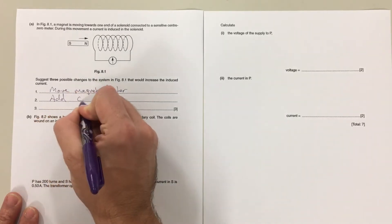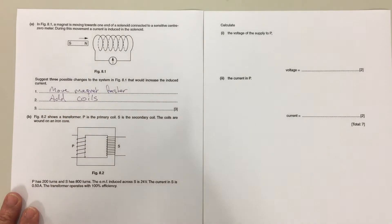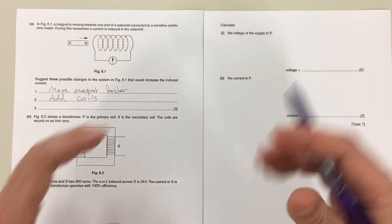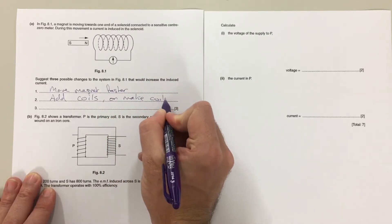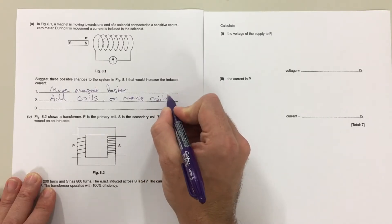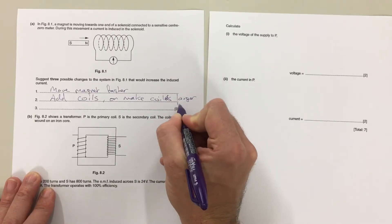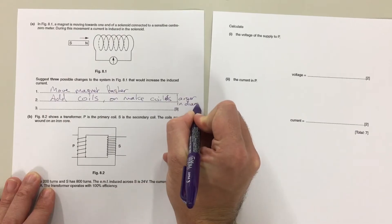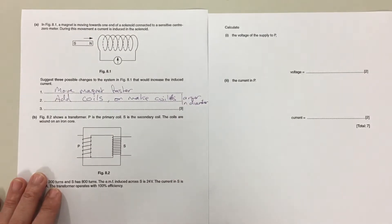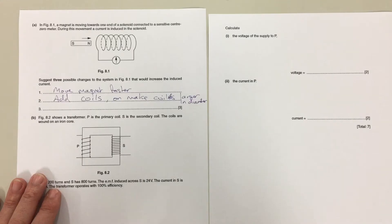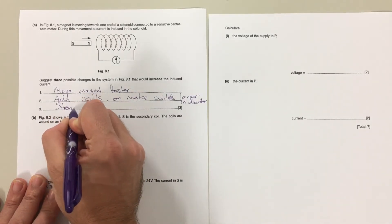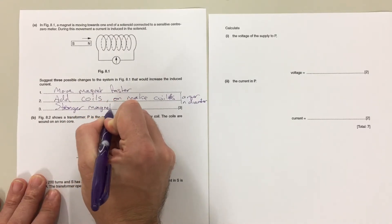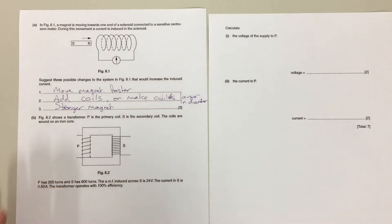Another way of adding more electrons is to make the coils larger in diameter. Make coils larger in diameter. Finally you could use a stronger magnet. A stronger magnet would have a bigger force on those electrons. So those are your three marks.